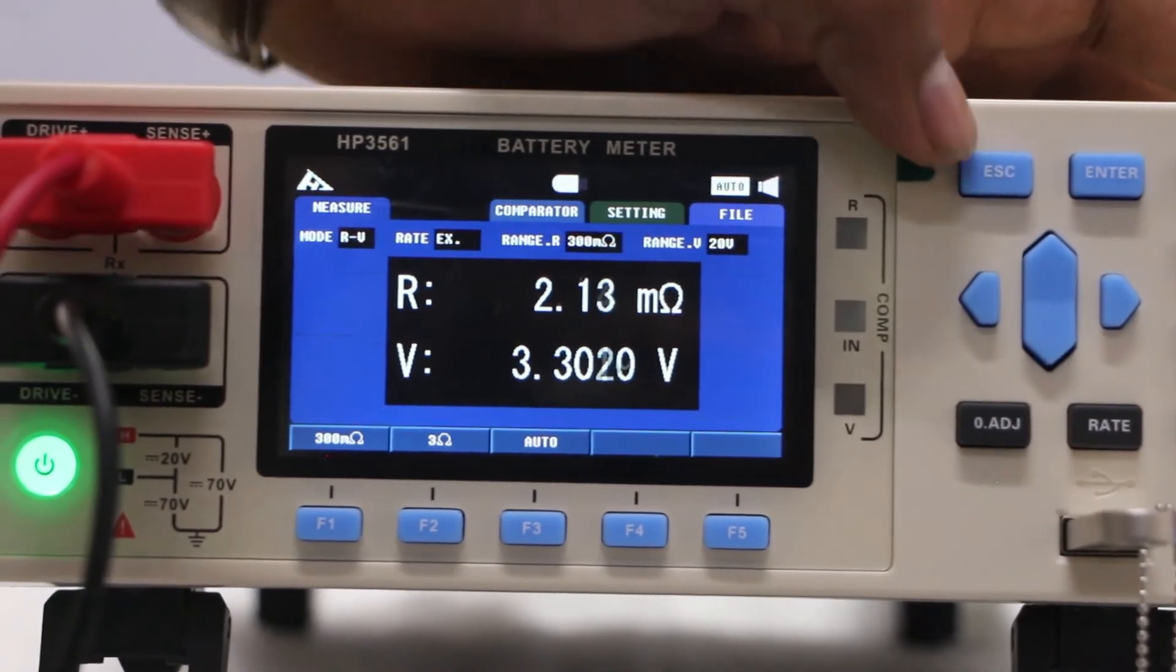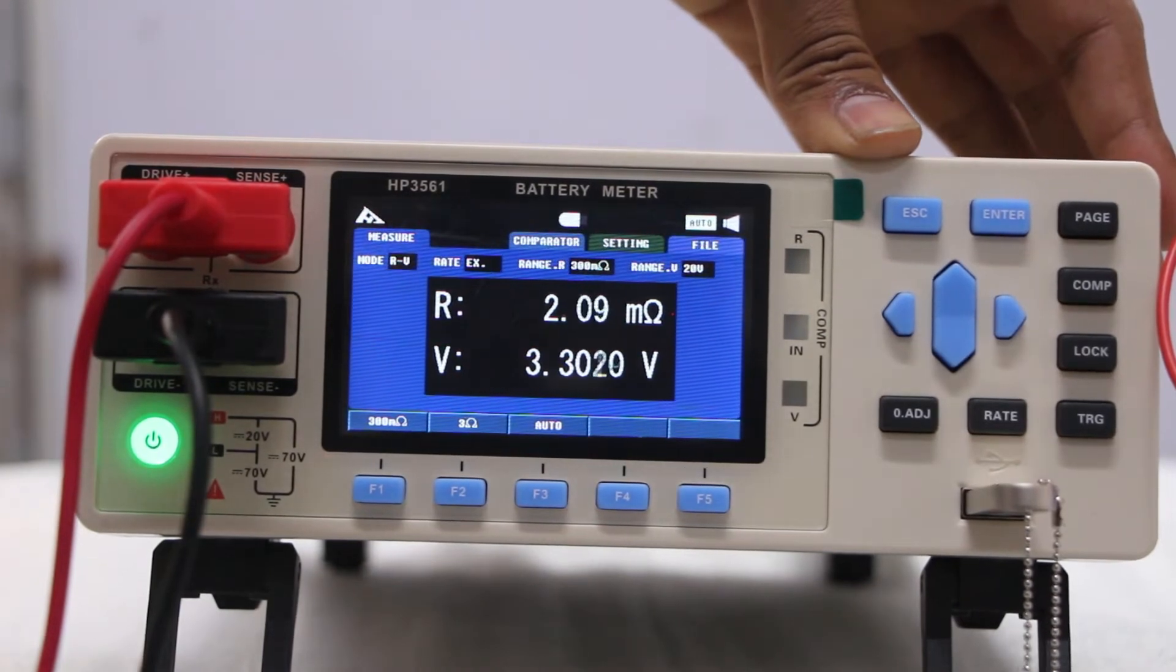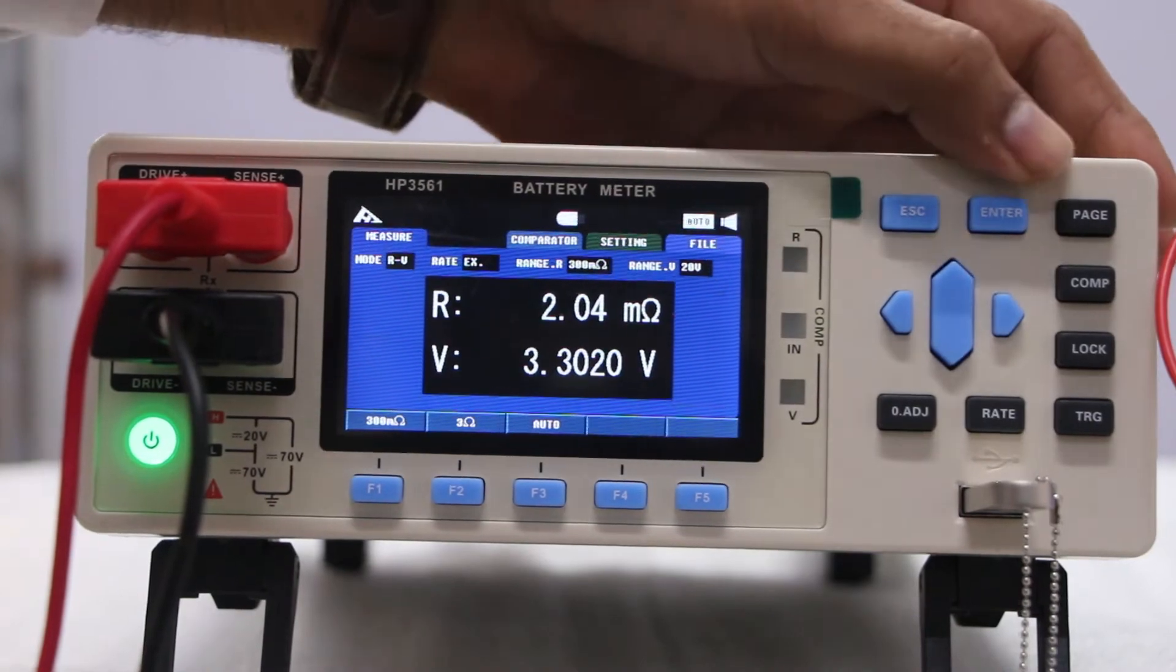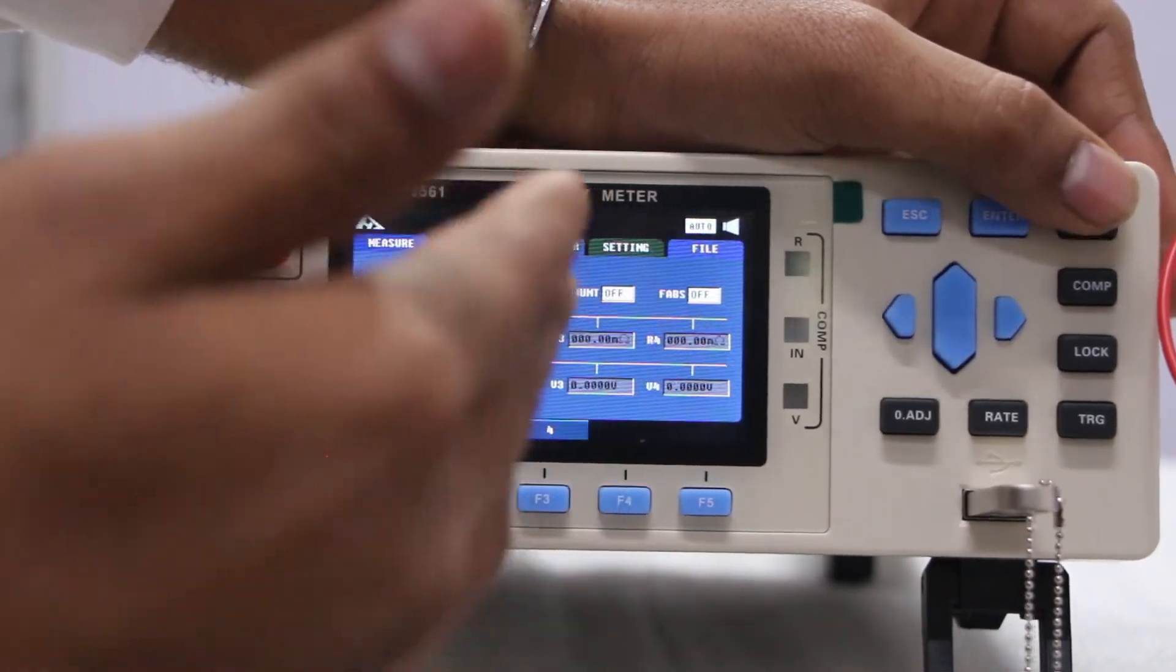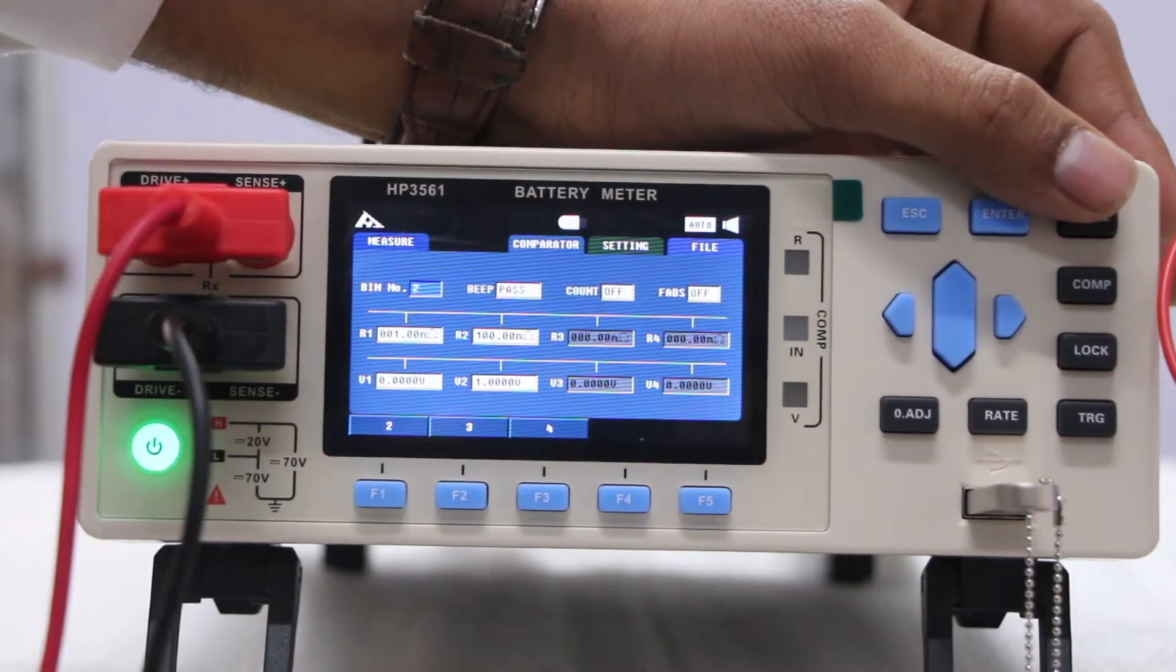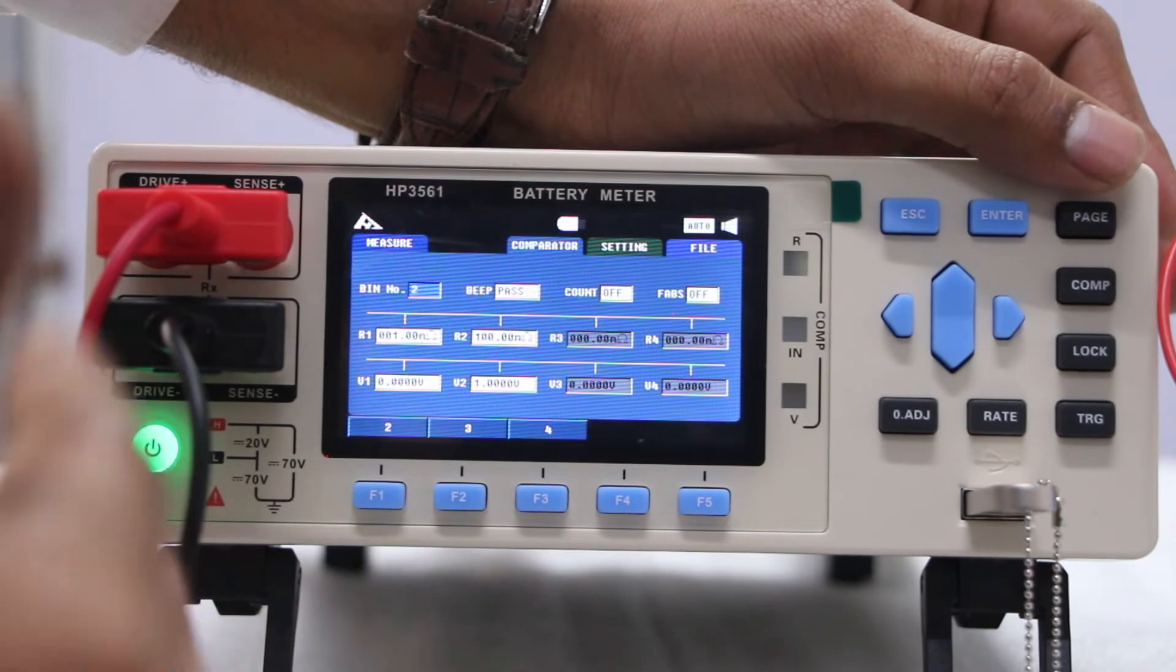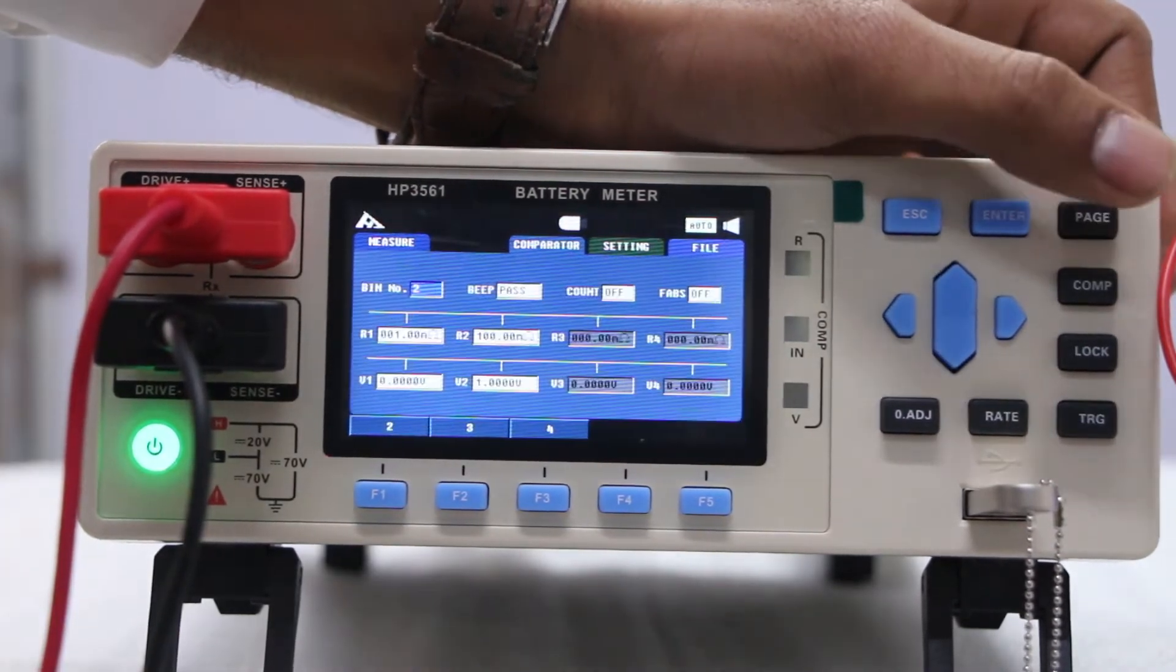There is ESC button for getting cancel or backward purpose. Enter is just like OK button. Page means the page movement like we are setting different types of page we operate in setting purpose. We can just flip your page or setting page by using the page button as you can see there.